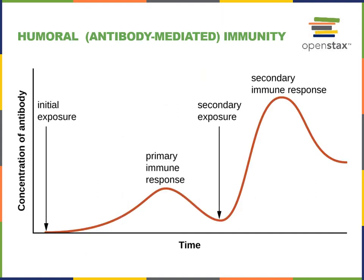During an initial exposure to a pathogen, there are no memory B lymphocytes — there are only the naive B lymphocytes. When a naive B lymphocyte becomes activated by exposure to a pathogen, it will produce memory B lymphocytes as well as the effector plasma cells that secrete antibody. Over the time course of the initial infection, the antibody concentration in the blood gradually rises, and then when the infection is cleared, the antibody concentration will fall, but not all the way back to zero.